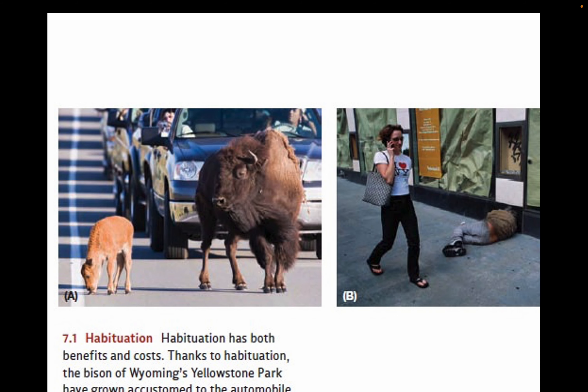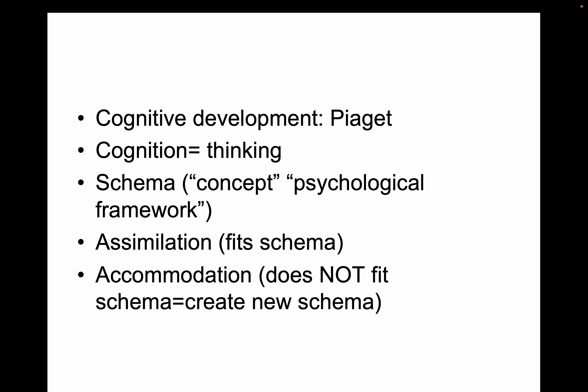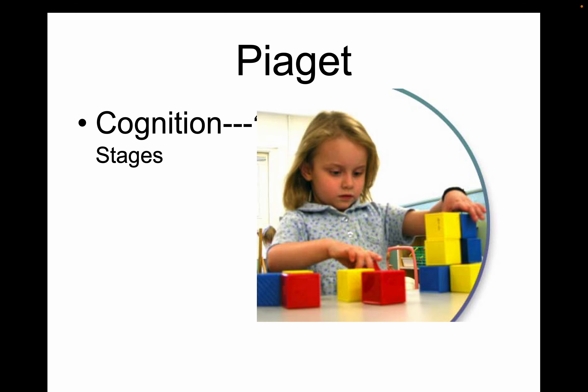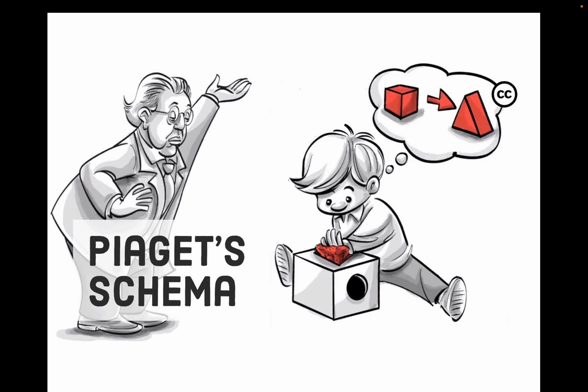Habituation is when you get used to something. For example, a buffalo would be unusual. It's important in this chapter because babies habituate — they get used to something and stop looking at it. So habituation is basically silent speech for a baby.